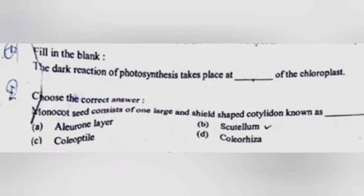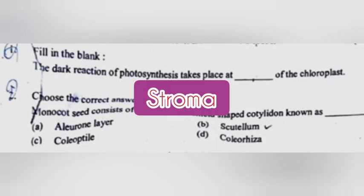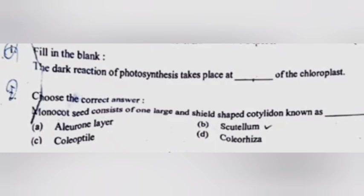Question 1: Fill in the blanks. The dark reaction of photosynthesis takes place at the dash of the chloroplast. Answer: stroma. Question 2: Choose the correct answer. Monocot seed consists of one large and shield-shaped cotyledon known as dash. Answer: B, scutellum.